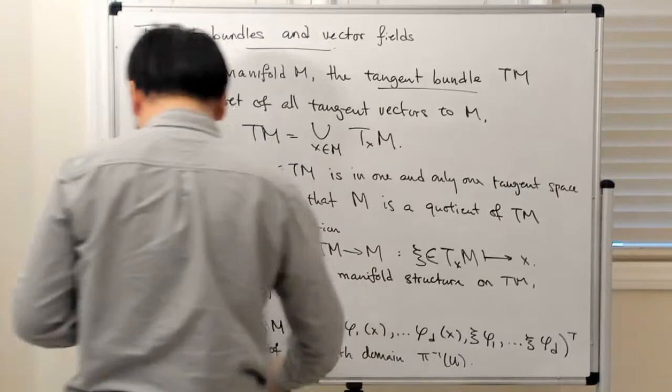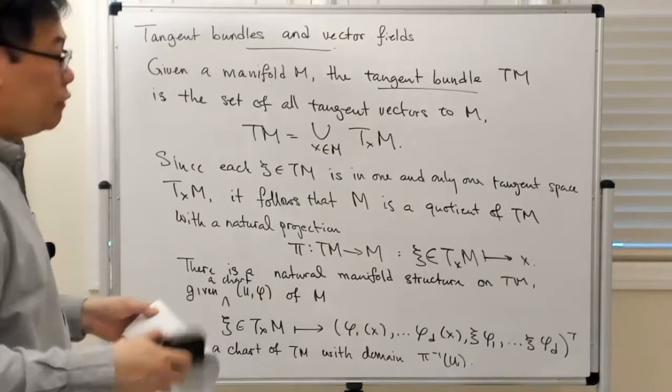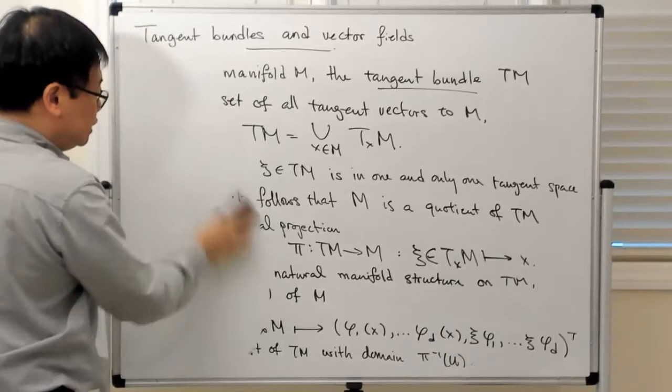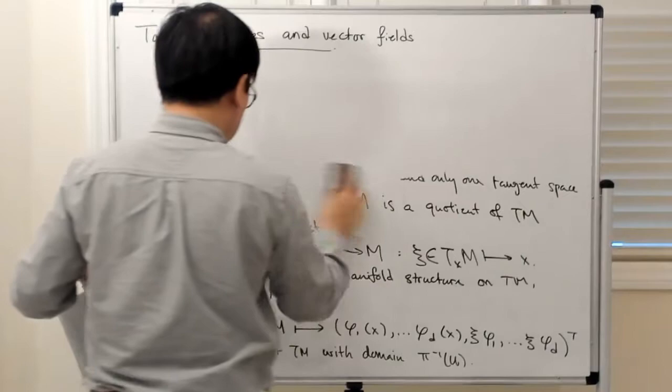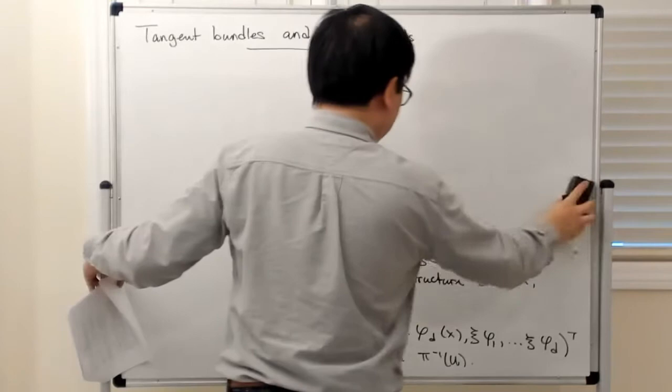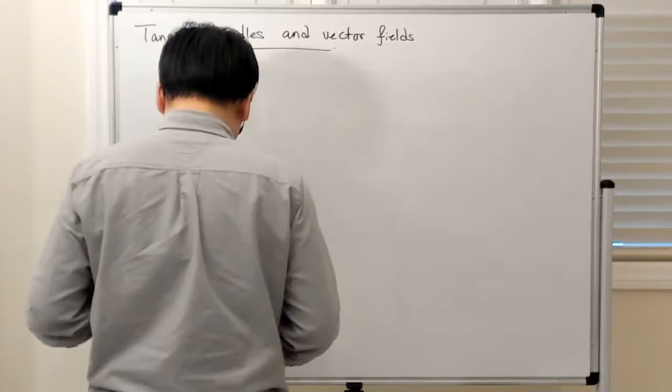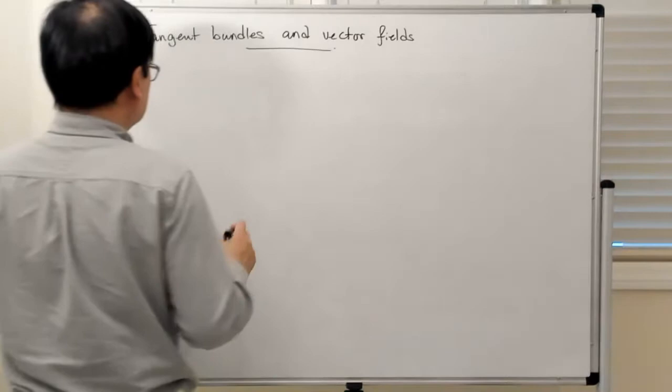Once you have this notion of tangent bundle, we can start talking about the notion of vector fields on the manifold. The idea of a vector field is that you have a map from the base manifold M to the tangent bundle with the property that it covers the identity map.